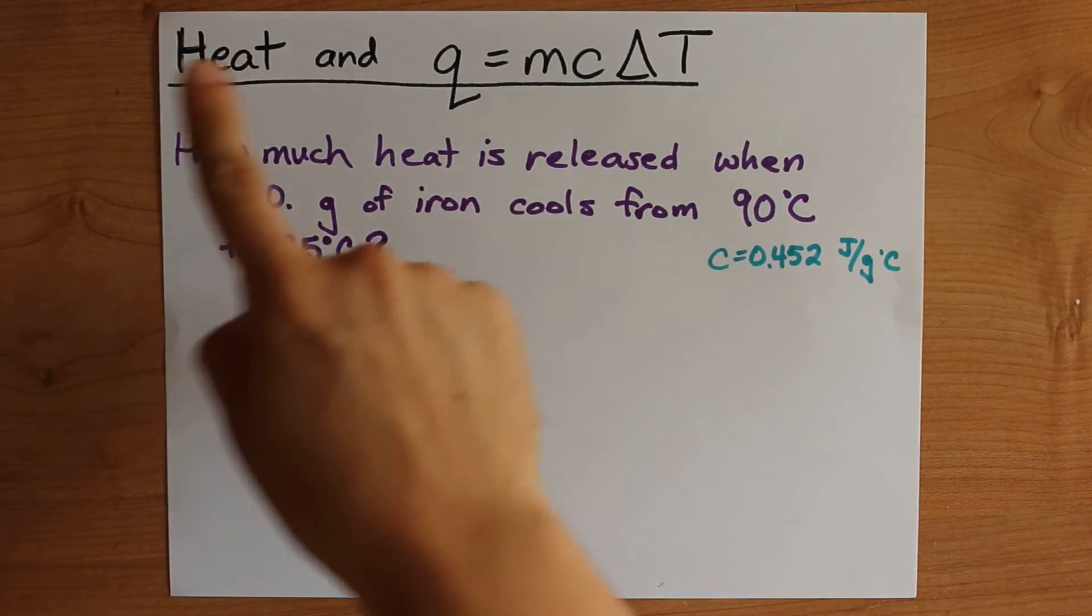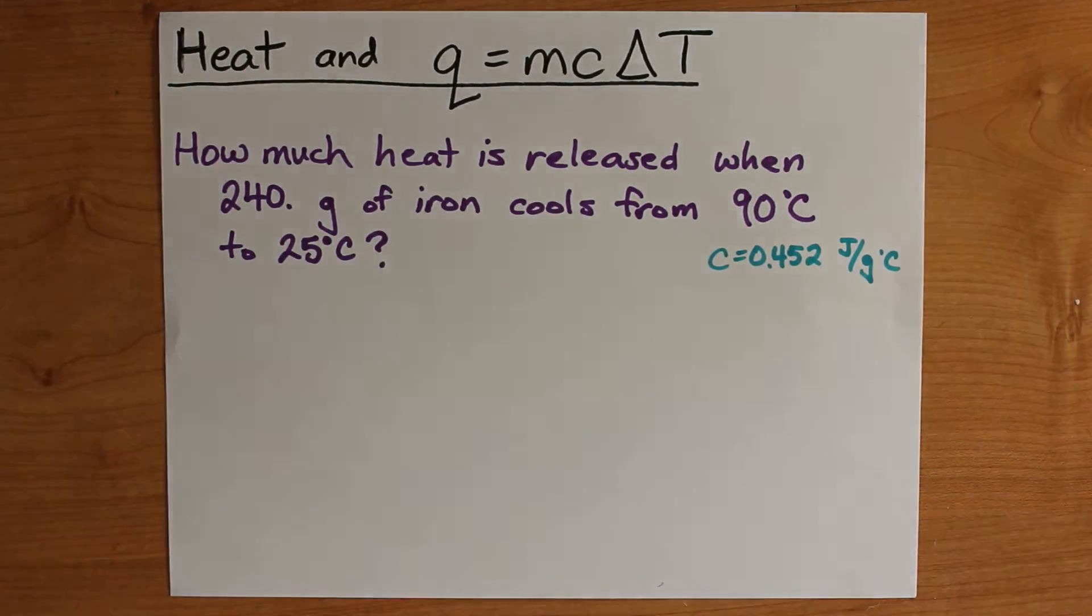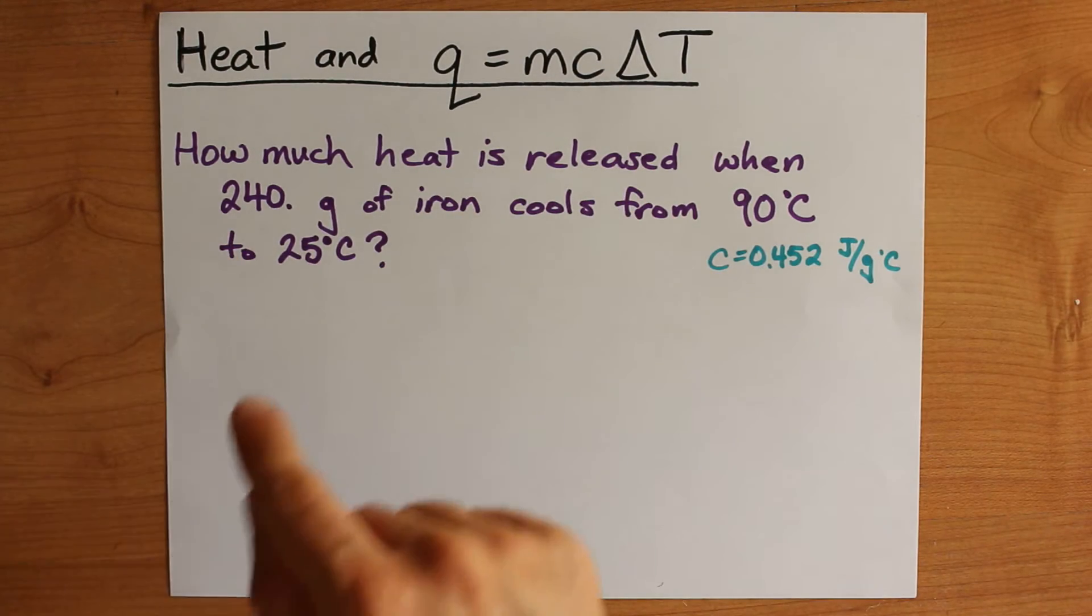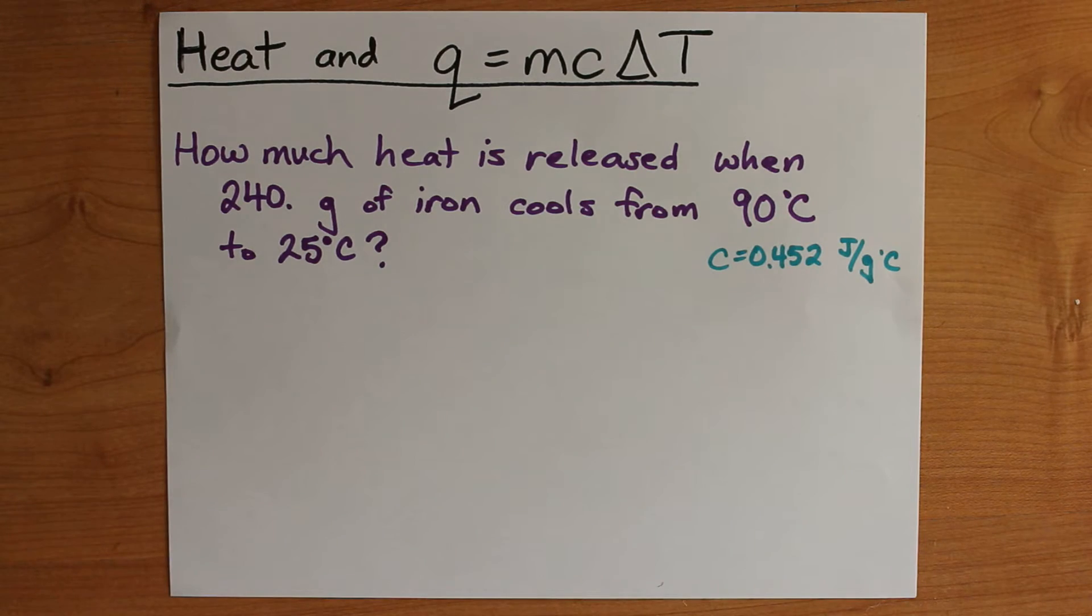I don't have any videos yet about heat and Q equals mc delta t. So here we are. How much heat is released when 240 grams of iron cools from 90 to 25 degrees?